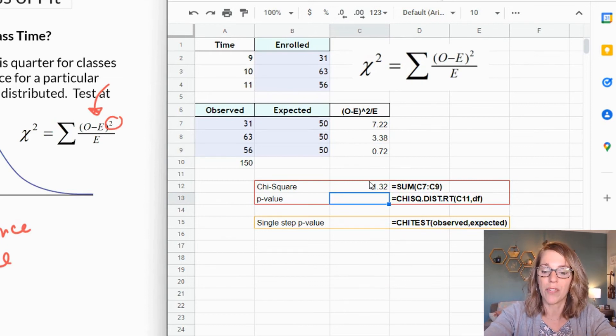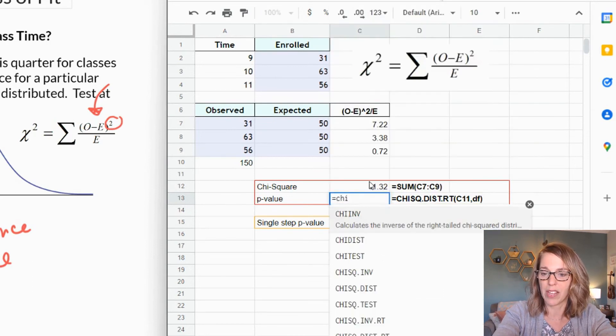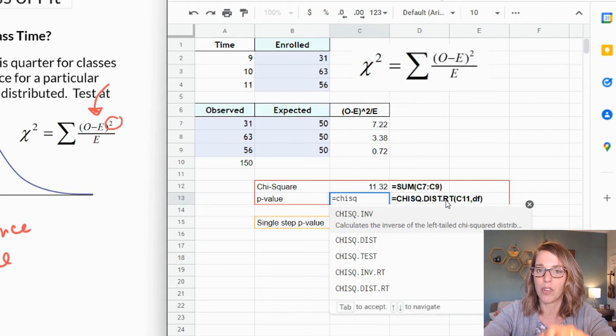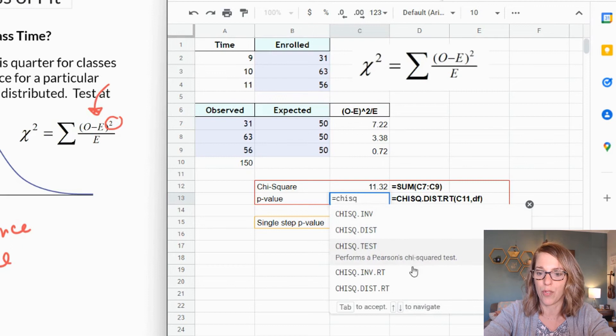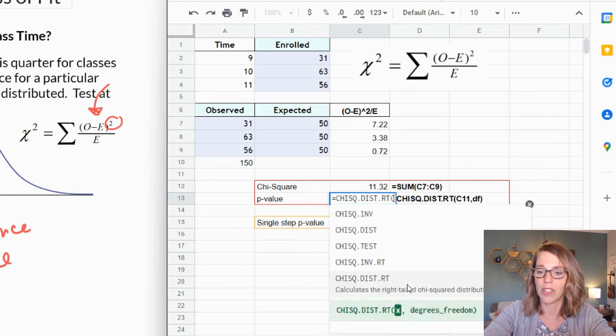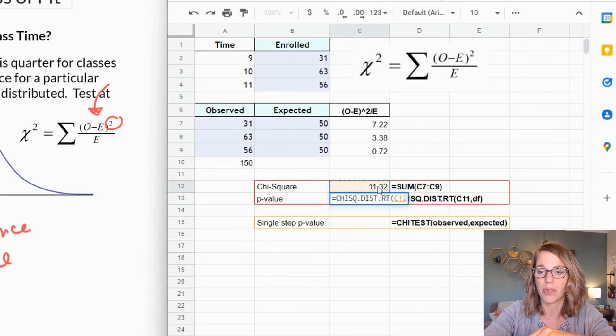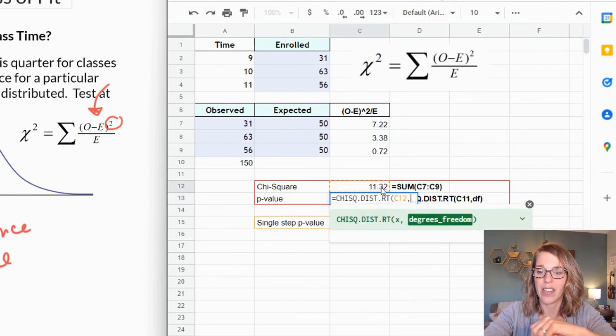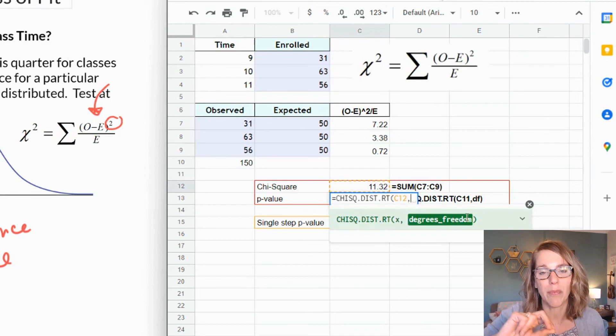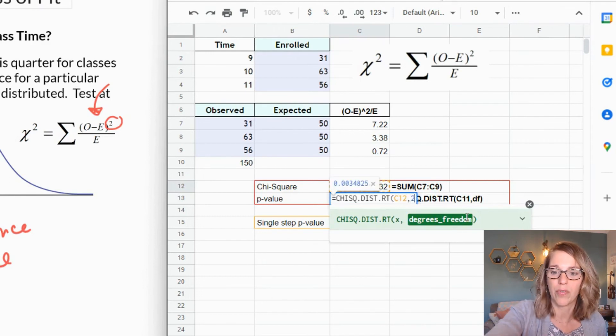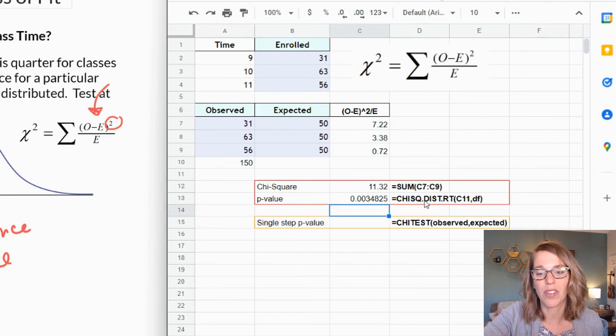To get the p-value, I'm going to call for this function. So I'm going to go equals and the function I've got typed right there. So I start typing chi-square and I'm looking for this chi-square distribution with the right tail. That's what we've got in our graph. I'm going to go ahead and grab this one. It tells me what I need. I need my, it says X but that's just my measure. So my measure is my chi-square measure. So I'm going to go ahead and click on my 11.32, the chi-square that we just calculated, and then comma. Now it needs degrees of freedom. This is number of data values minus one. We've got three data values, subtract one, degrees of freedom is two, and then you can hit enter. So there's my p-value. It's very very small, which means that I'm going to be rejecting my null hypothesis.